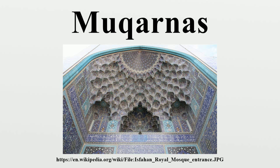Large rectangular roofs in wood with mukhanas-style decoration adorn the 12th century Capella Palatina in Palermo, Sicily, and other important buildings in Norman Sicily. They are also found in Armenian architecture.